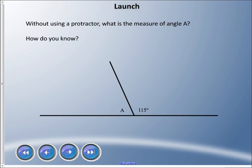And without using a protractor, what is this measure of angle A? And how do you know? So angle A is this guy here. We know that this side is 115, but what is the other side?